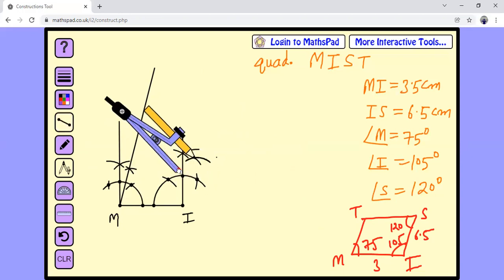And then from this point, also the same arc. So that will give you 105 degrees. So this line over here, this angle will give you 105 degree angle.